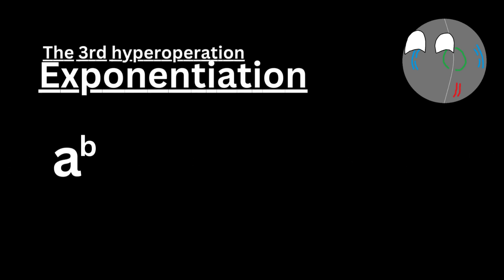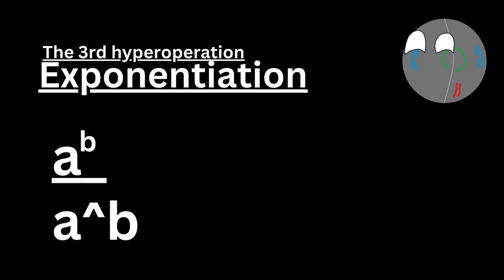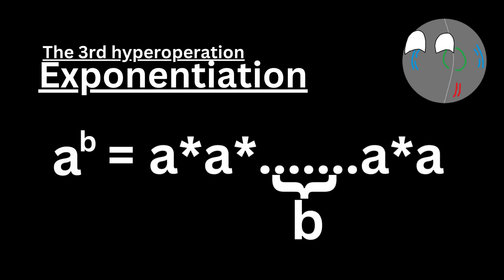Next is the third level of hyperoperation: exponentiation — this is where all the chaos starts to unfold. There are two ways to denote it: a with b in the top right (a^b), or using arrow notation with one arrow between a and b. Each higher level of hyperoperation adds another arrow. So a to the power of b equals a times a times a... b number of times.